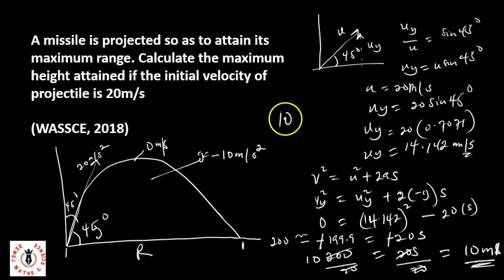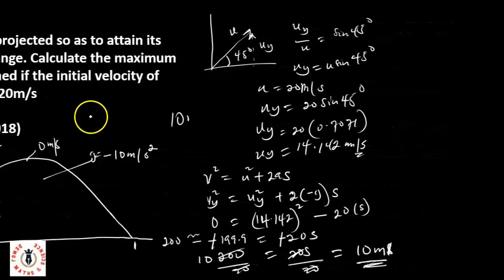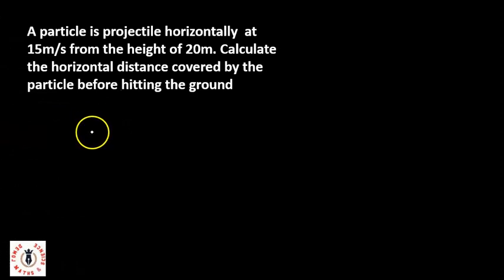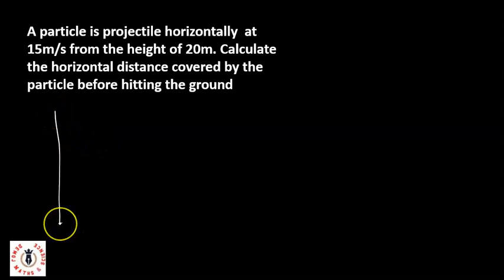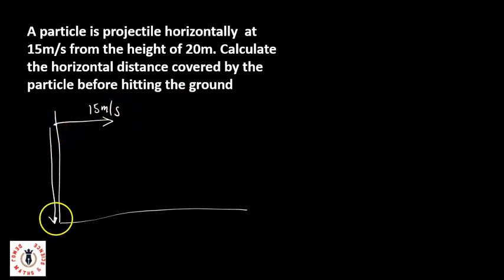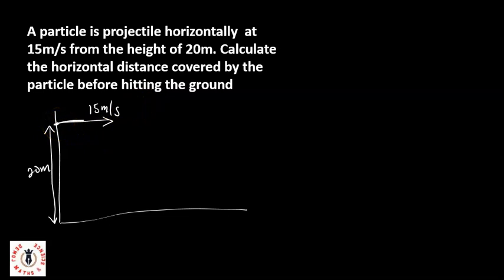For the second question: a particle is projected horizontally at 15 meters per second from a height of 20 meters. Calculate the horizontal distance covered by the particle before hitting the ground. The particle is projected horizontally, so it follows a projectile path from a height of 20 meters down to the ground. We need to calculate the horizontal distance — that is, the range R.